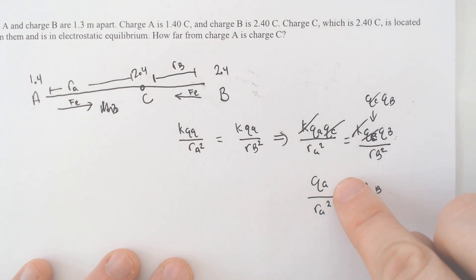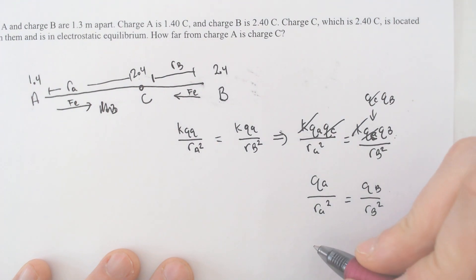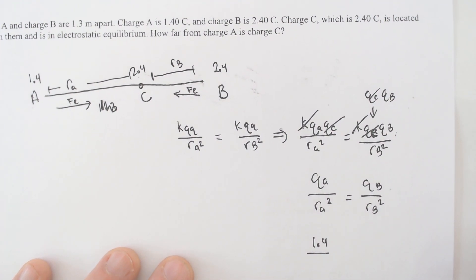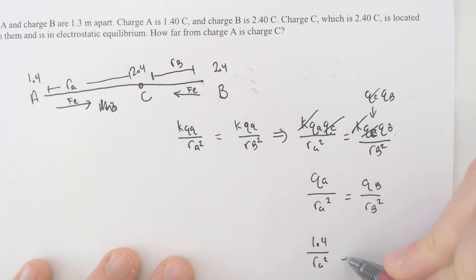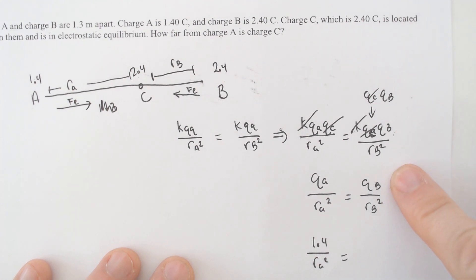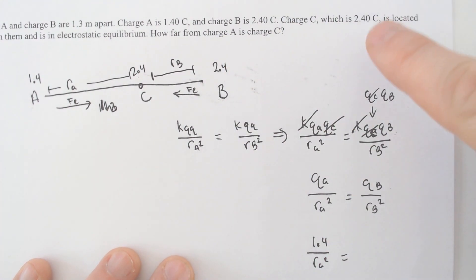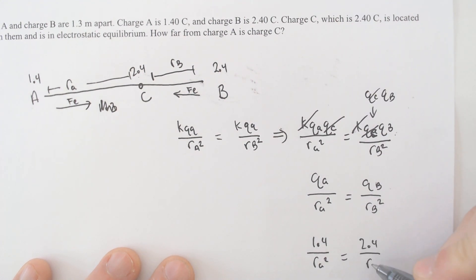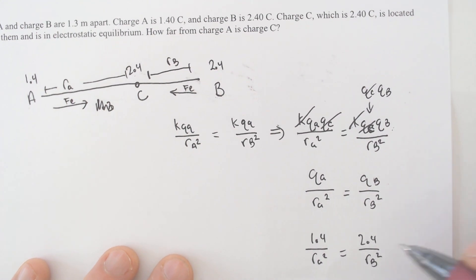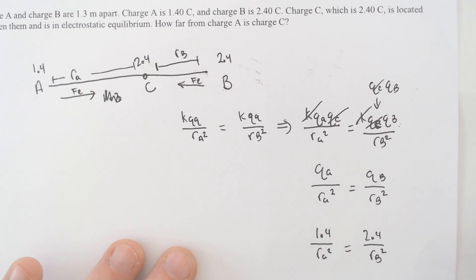Q of A we got. It's 1.4 Coulomb over radius of A squared. Q of B we got. It is 2.4 coulombs over radius of B squared. We could cross multiply this but we're going to run into an issue because we have radius of A squared and radius of B squared.